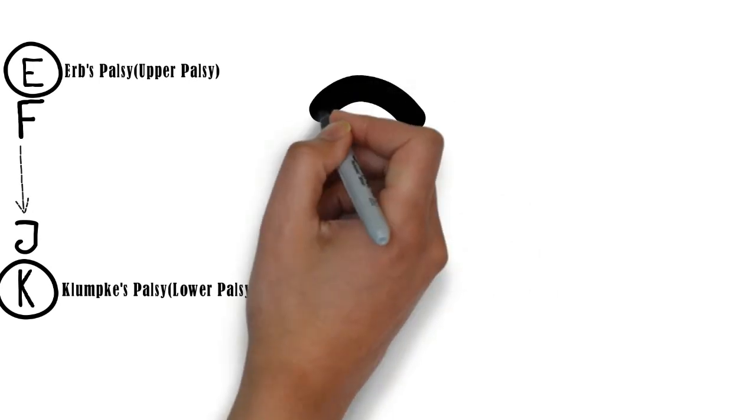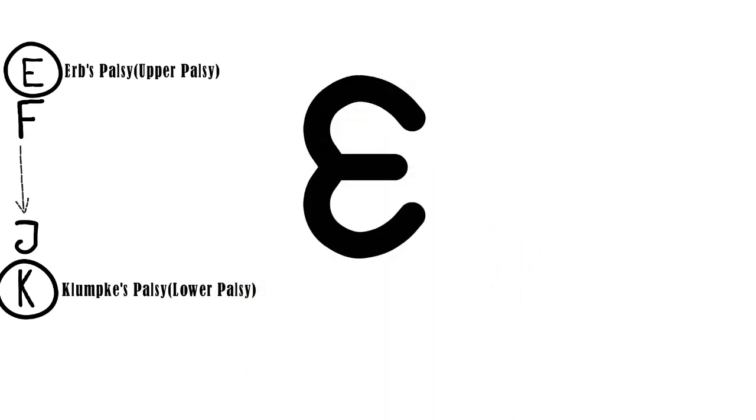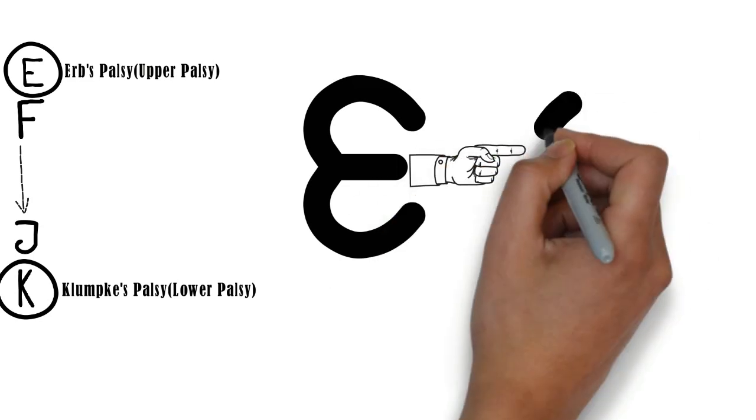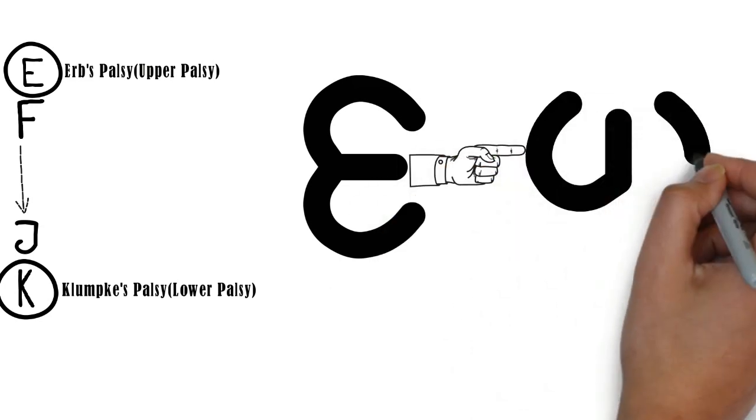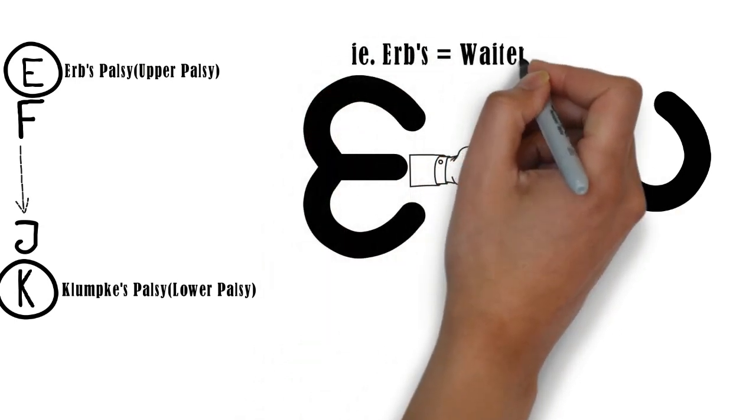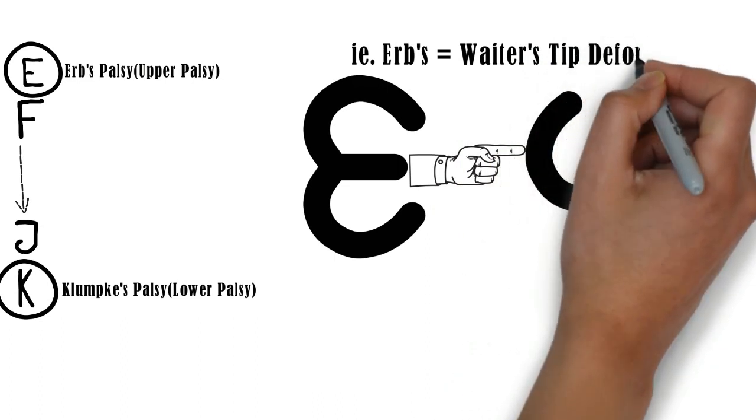To remember the deformity in Erb's palsy, when you rotate E from Erb's palsy in the anti-clockwise direction, it will form W. That is, Erb's equals waiter's tip deformity.